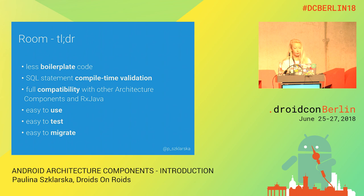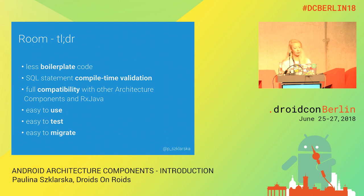To summarize Room: Room is cool because there is almost no boilerplate code — the only SQL statement I needed to write was just the select statement. SQL statements are validated during compile time, not runtime. There is compatibility with LiveData and RxJava, which I will show a little bit later. And Room is easy to use, test, and migrate.